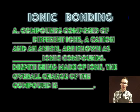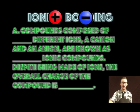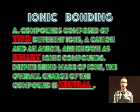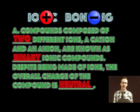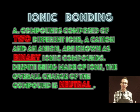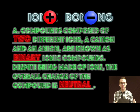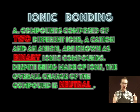Now for naming and writing compounds we're gonna look at compounds that are composed of two different ions. A cation and an anion and these are known as binary ionic compounds. Important to recognize that despite being made of ions the overall charge the compound is neutral.